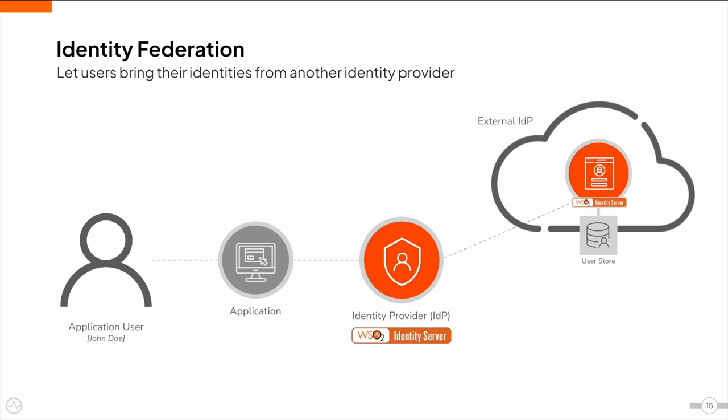Identity Federation enables access to multiple systems across different organizations. In the current world, businesses continue to grow with acquisitions and mergers, requiring you to grant permission to users from other organizations to access your applications. Rather than creating accounts for all users in each application, we can create a trust relationship between IDPs. When a user from one organization wants to access an application in another organization, the request will first come to the IDP of their own organization and then be forwarded to the IDP of the other organization. The user can then access the application as the IDPs now trust each other. This is called Identity Federation.